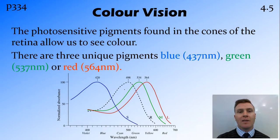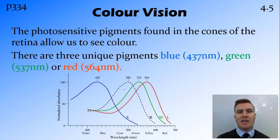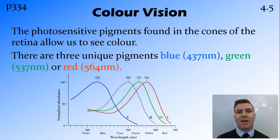The way that we can perceive the many, many different colours that we can is because of these photosensitive pigments that are found in the cones in our retina. We have three pigments that are found in three different cones, and these pigments are sensitive in the blue, green, and red wavelengths.